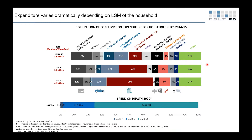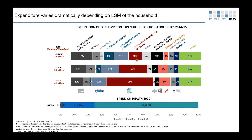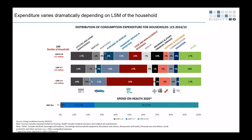This slide shows the difference in expenditure based on LSM. Down at LSM 1 to 4 — about 4 million households — almost a third of income goes to food. At LSM 8 to 10 — also about 4 million people — only 10% goes to food and non-alcoholic beverages. As income goes up, the relative spend on food stays the same in absolute terms but drops as a percentage. And there's no limit to how much some men can spend on cars.